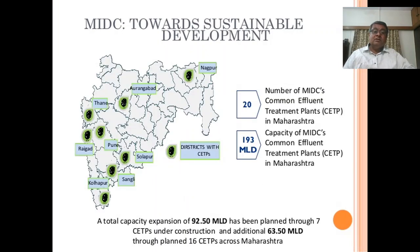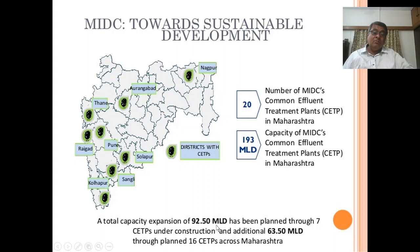Regarding MIDC towards sustainable development: there are 20 MRCs with Common Effluent Treatment Plants in Maharashtra, with a capacity of 193 million liters per day. A total capacity expansion of 92.50 MLD has been planned through seven Common Effluent Treatment Plants under construction, and an additional 63.50 MLD through 16 CTPs across Maharashtra.